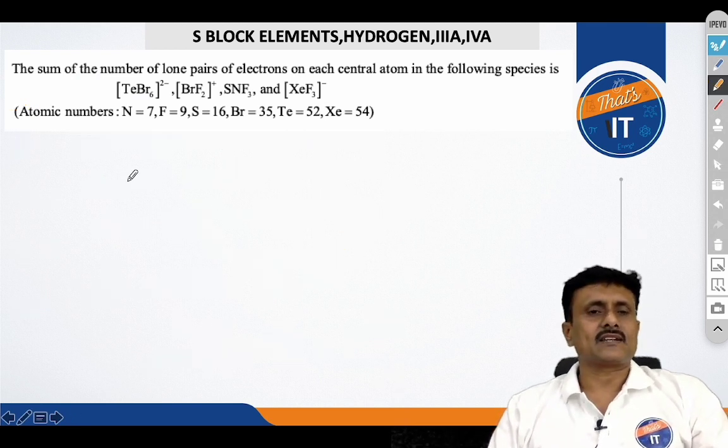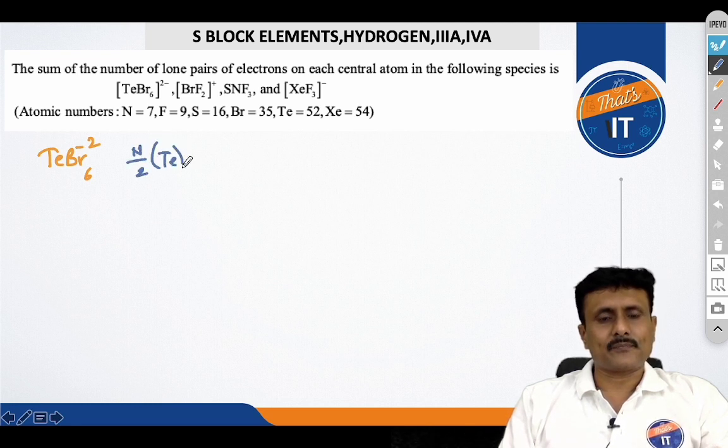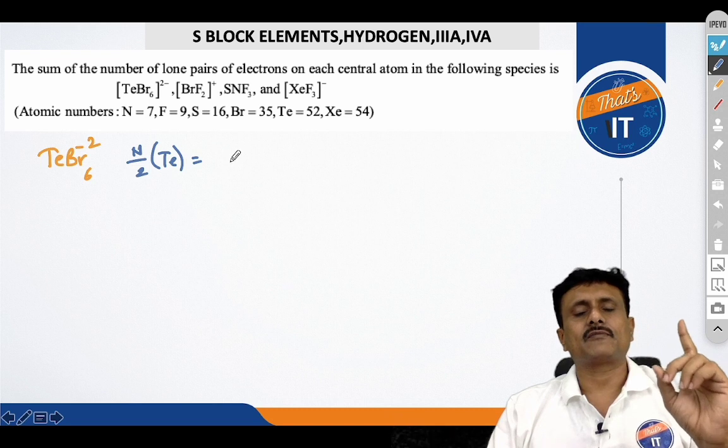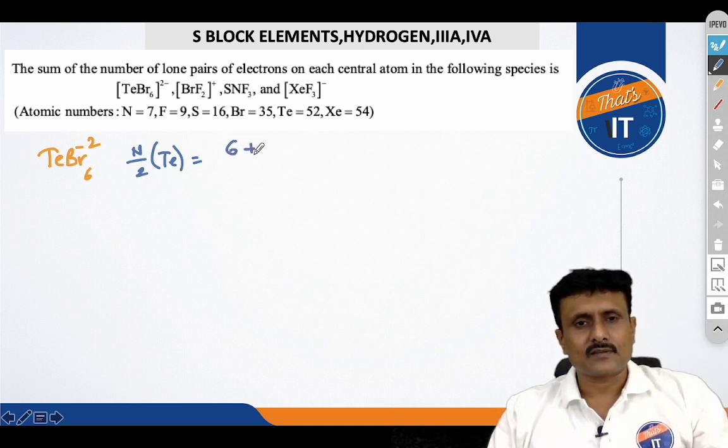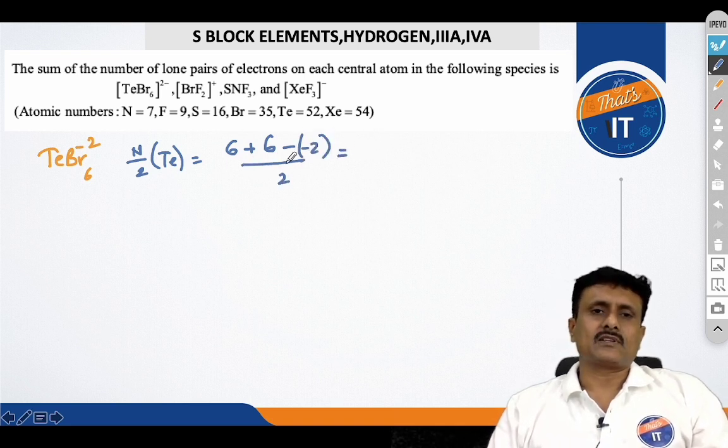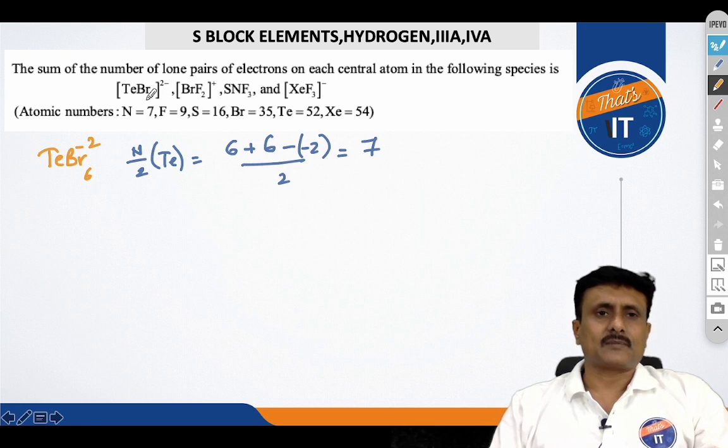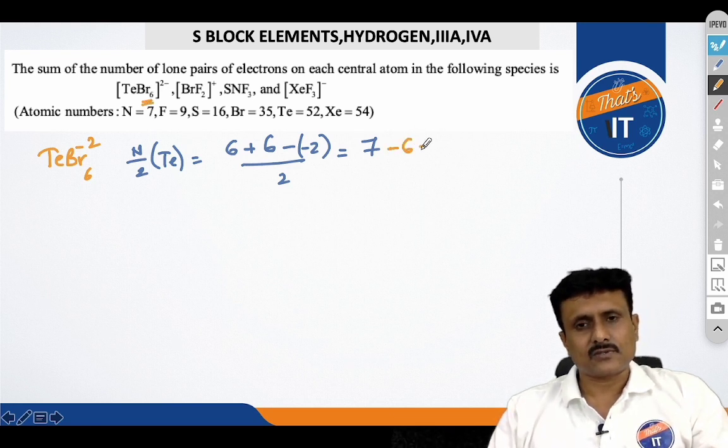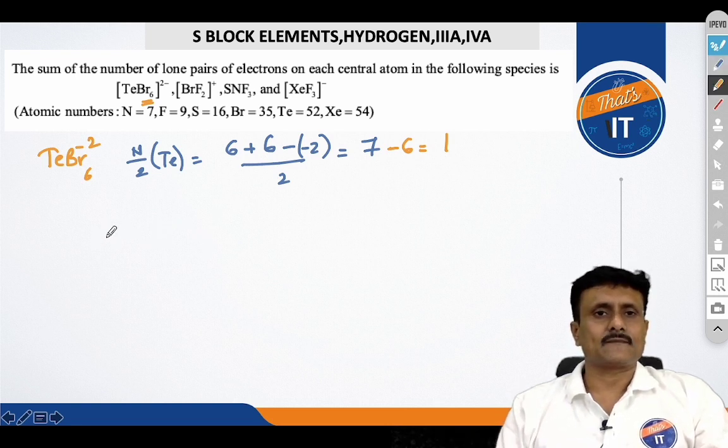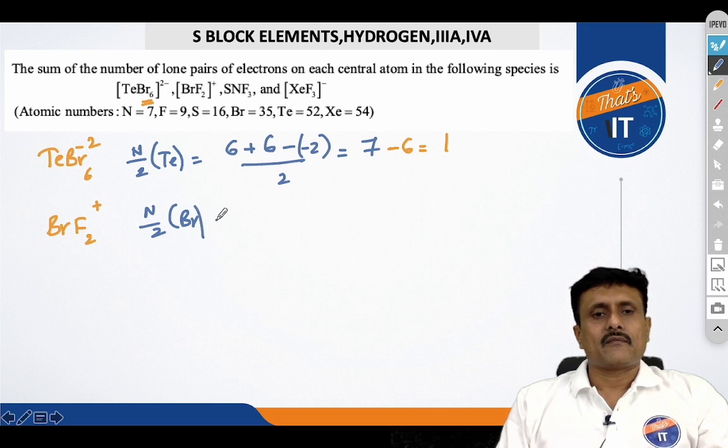So, there is a method which I repeatedly refer to these type of questions. So, when you take TeBr6 minus 2, you have to find out the N by 2 value of the central atom, tellurium. Valence electrons, you know that oxygen, sulfur, selenium, tellurium, polonium, sixth group, plus halogens attached, minus of minus charge by 2. So, this is the easiest way to find out the number of lone pairs. You can see that 14 by 2, that is 7. After that, you have to subtract the number of atoms that are attached to it so that you can get the lone pairs. Do that in all the cases.